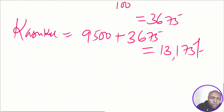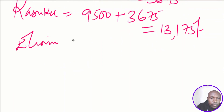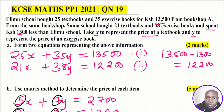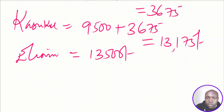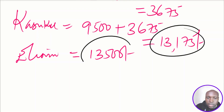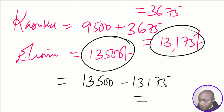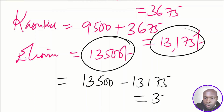Elamu School spent 13,500 shillings. To find the difference between the amounts spent by Kasuku School and Elamu School: 13,500 − 13,175 = 325 shillings. That is how you solve that question.